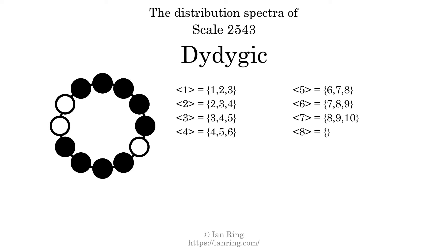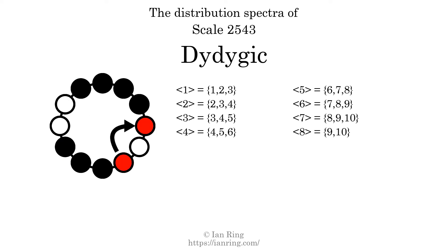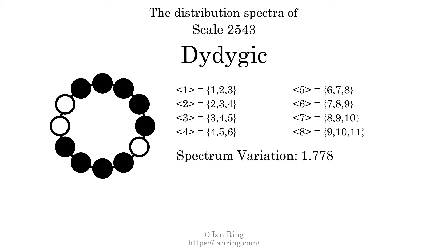Finally, the generic interval of 8 scale steps comes in three specific interval sizes: 9, 10, and 11 semitones — spectrum width 2. The spectrum variation is the sum of all the widths divided by the number of tones. The spectrum variation of this scale is 1.778. Since the variation is greater than 0, this indicates the scale is not perfectly even. The highest spectrum width is 2, so this scale is not maximally even.